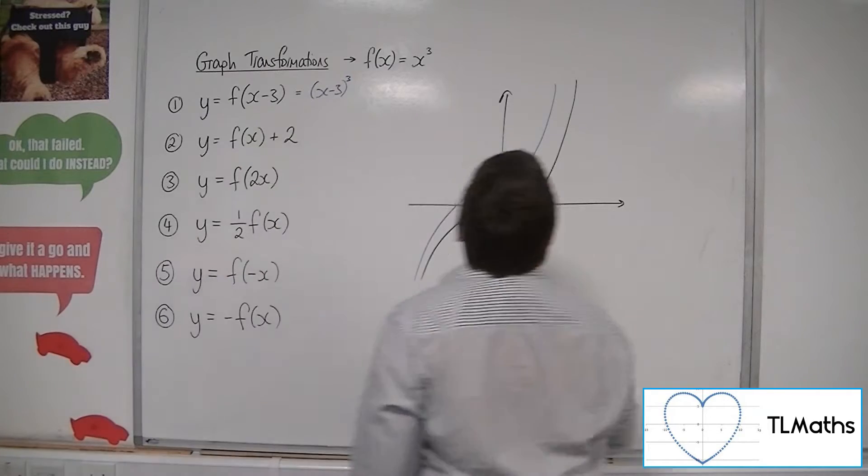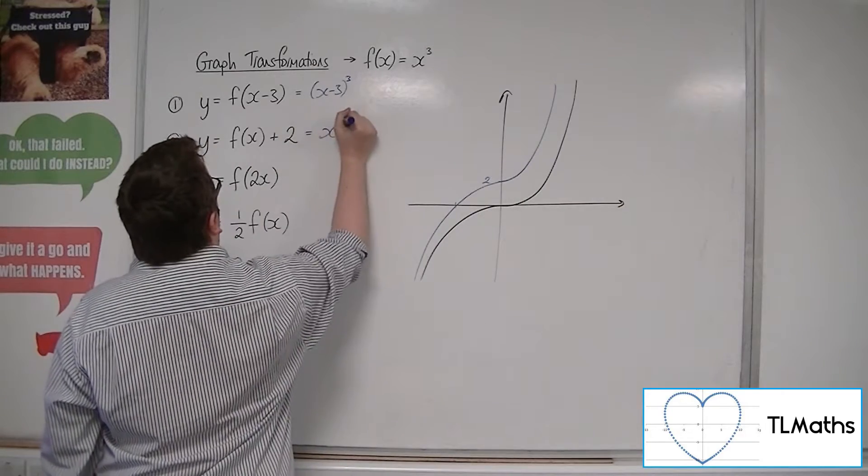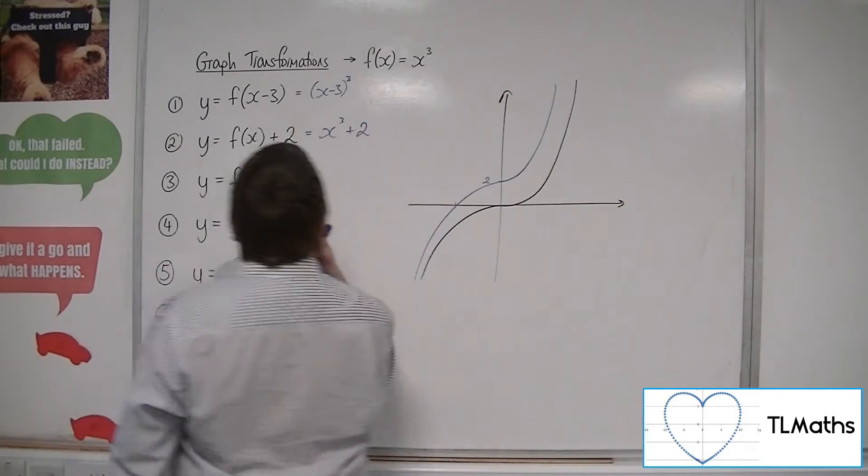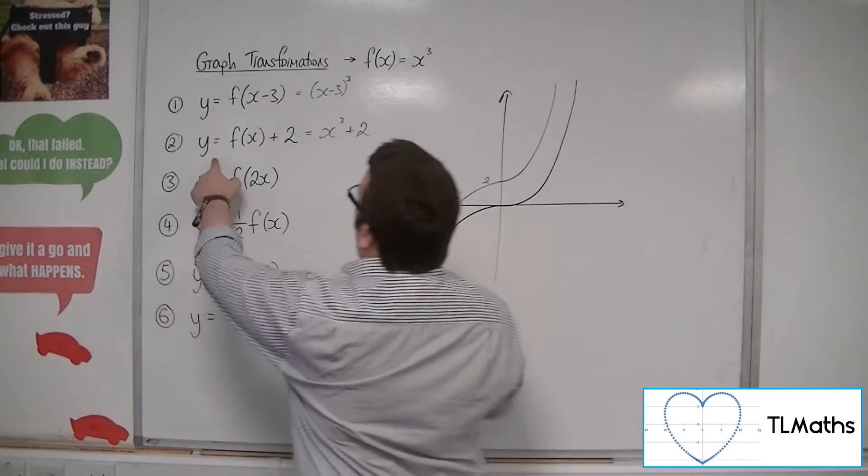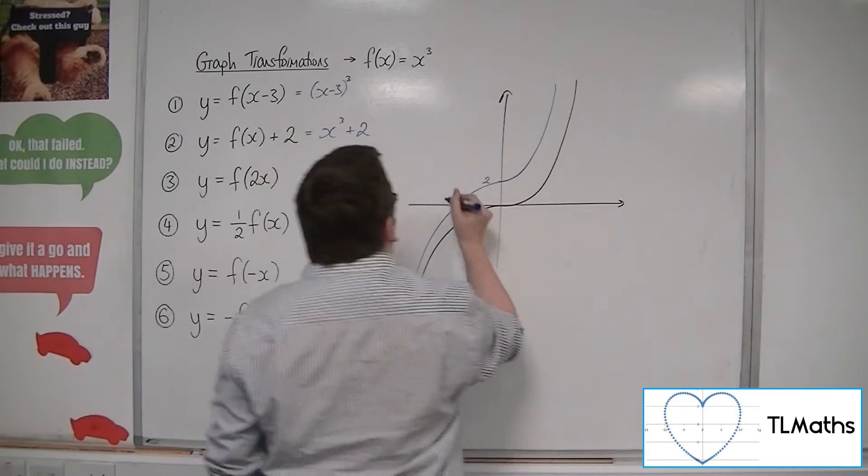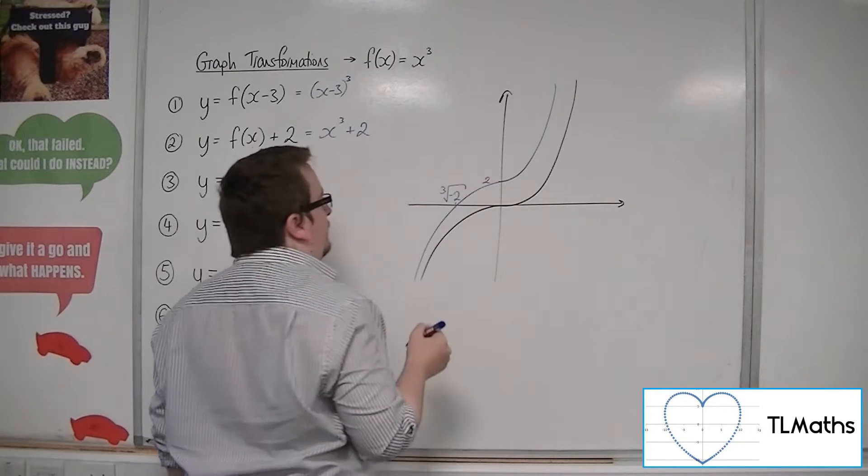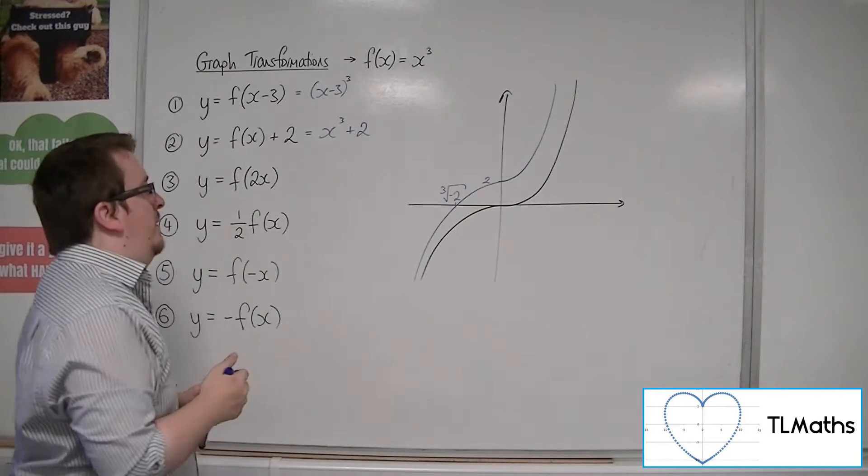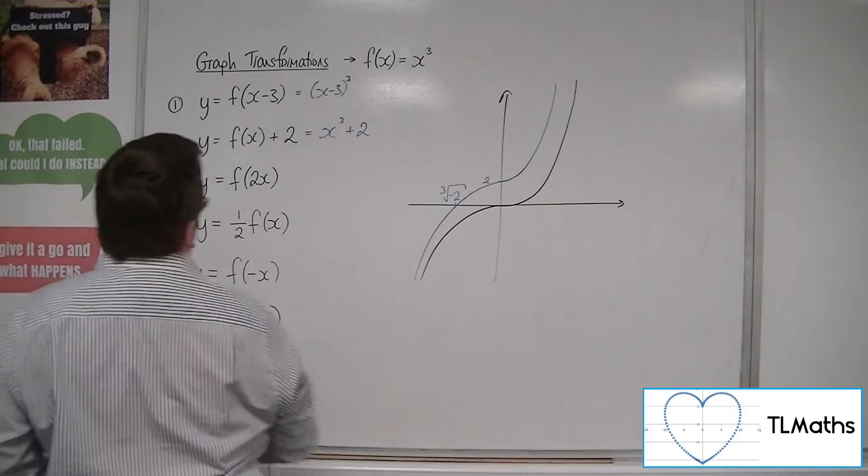We could also work out where it's crossing the x-axis. So this would be x cubed plus 2. It's crossing the x-axis when y is 0. So if y is 0, you could subtract 2 from both sides, and then cube root. So this is the cube root of minus 2. That would be that value. So that would be my translated curve.